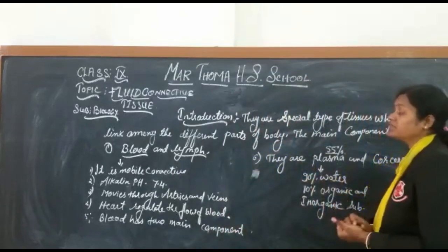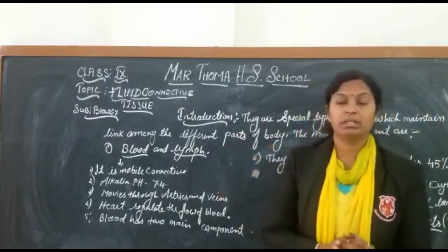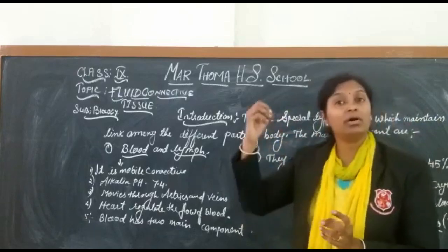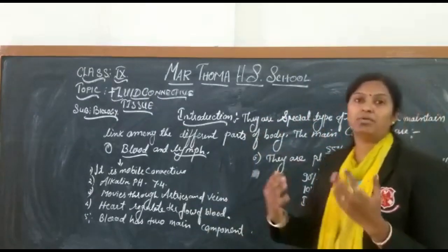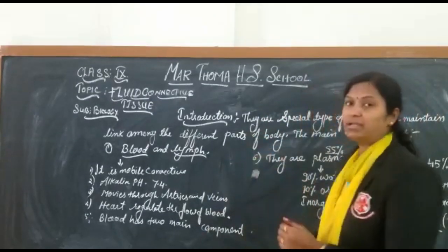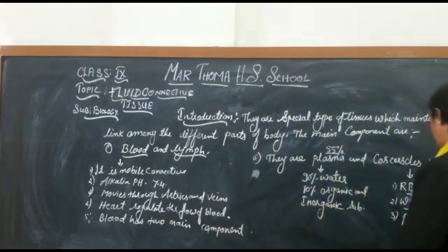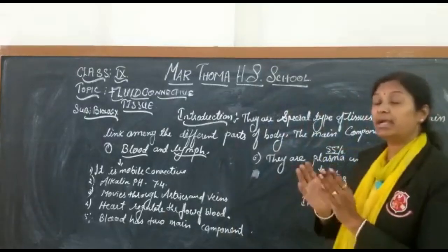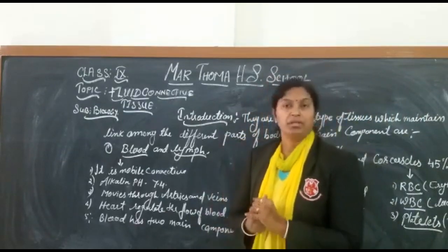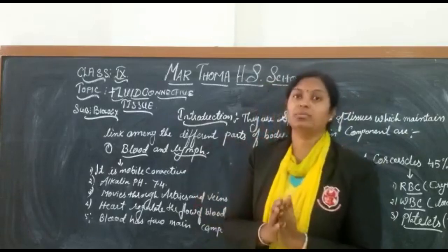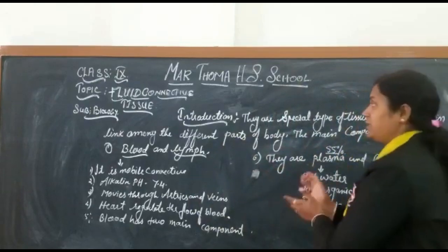The third important function of blood involves RBC, which carry oxygen in the blood. WBC serve as the immunity power of our body, fighting against diseases. Platelets, or thrombocytes, act as the clotting agent and help in clotting the blood. This fluid connective tissue is a very special type of tissue.